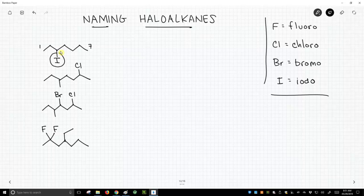And so that means we're going to number from the left, and so the iodo group sits on carbon 3, and so we say 3-iodoheptane. Note again, when we have numbers and letters together, we have to separate them by a dash or a hyphen.